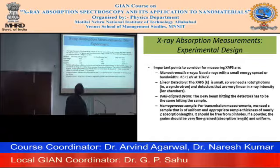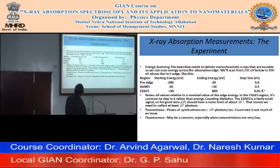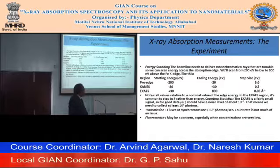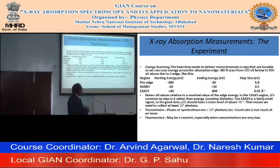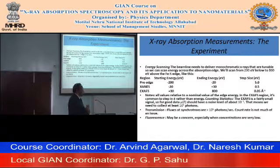The pre-edge is defined from −200 eV to −20 eV; XANES is from −20 eV to +30 eV; and EXAFS is from +30 eV to +800 eV. When recording EXAFS data, the energy step size used for the pre-edge is 5 eV, for XANES it is 0.5 eV, and for EXAFS data it is much smaller — as small as 0.05 eV.